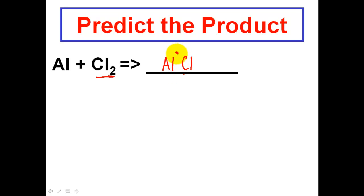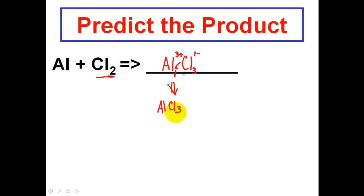You need to take the charges of 3+ and 1− and cross them. The 1− goes down as a 1, and the 3 goes over as a 3. The product is AlCl3. So that is what is produced — the product is the substance on the right-hand side of the equation. So far, I've done a decomposition reaction and a synthesis reaction where two elements combine together to form one.